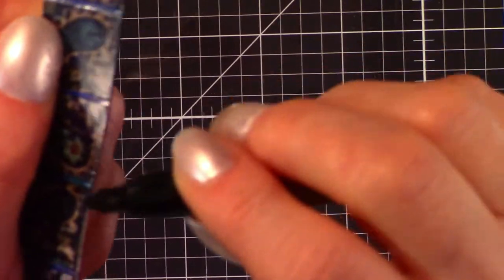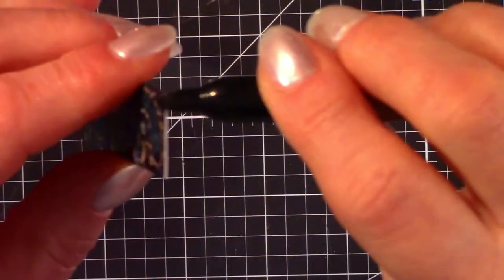Now we're going to finish the ends with a marking pen, just to hide that white edge of paper.